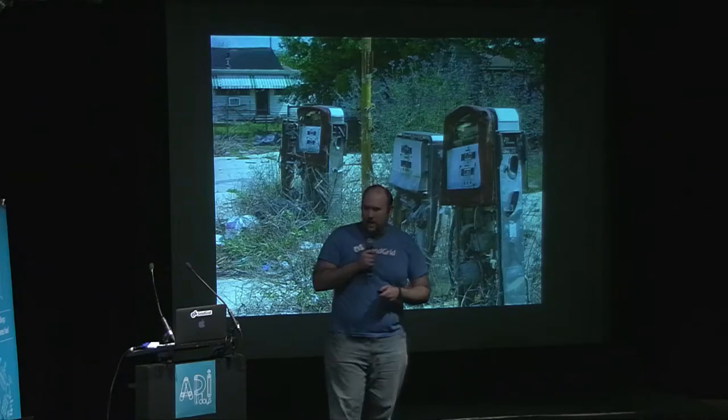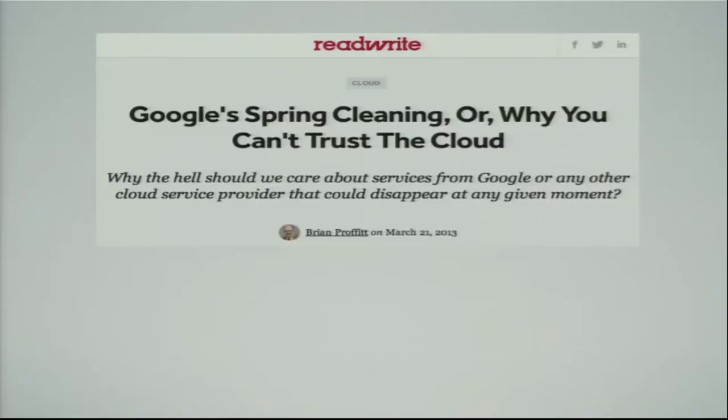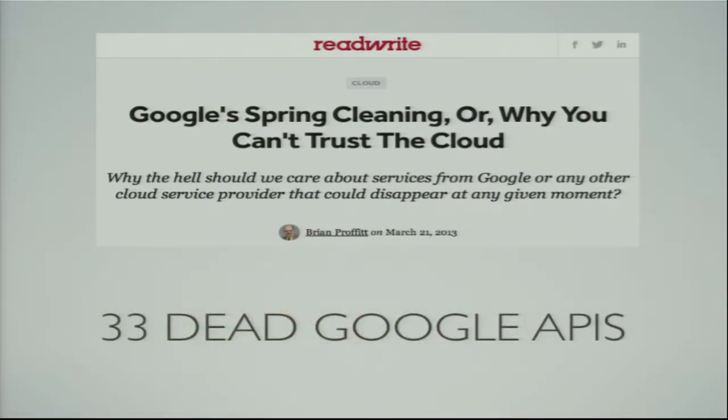Even some of those early movers have begun to realize the open API world isn't a utopia. Take Google with their series of spring cleanings — they shut down a lot of services, including APIs. Now there are over 33 dead Google APIs, and Google has over 100 APIs total, meaning close to a third of all APIs they've ever made public are now not usable or supported.